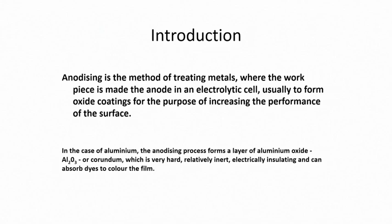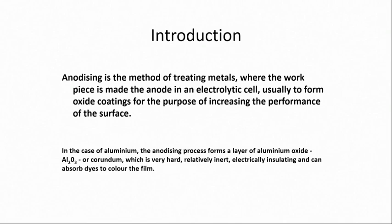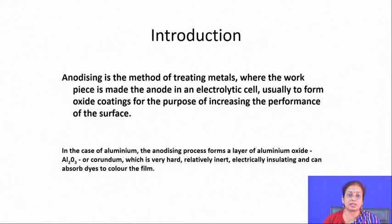In aluminum anodizing, there is formation of a very thin aluminum oxide (corundum) layer, which is hard, relatively inert, electrically insulating, and can absorb dyes to color the film. Aluminum is used as the anode. Since there is always a thin native oxide layer on aluminum, the surface must be properly polished and cleaned prior to anodizing, typically using caustic soda solution to dissolve existing oxides, followed by rinsing with water and drying.